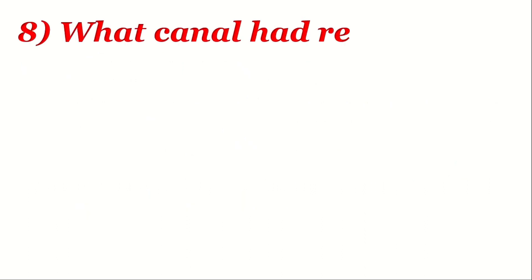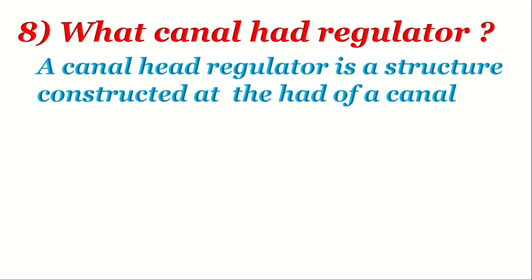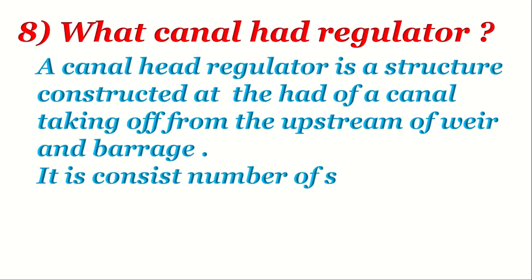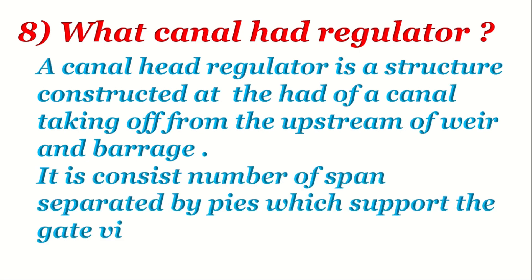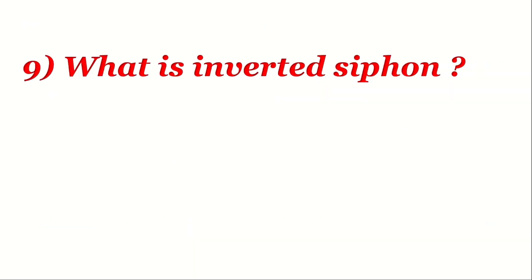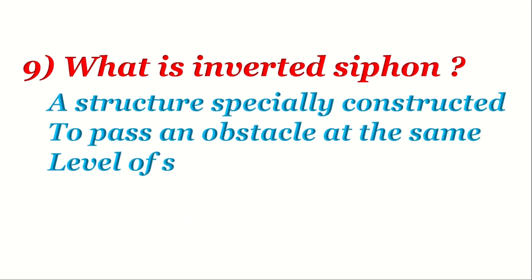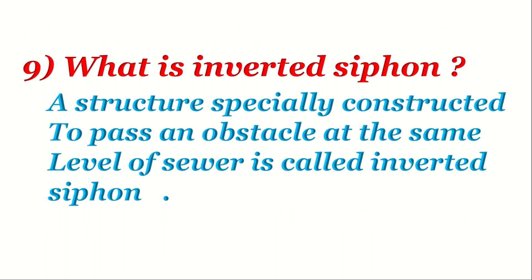Question 8: What is a canal head regulator? A canal head regulator is a structure constructed at the head of a canal taking off from the upstream of a weir and barrage. It consists of a number of spans separated by piers which support the gate boards for regulation of flow into the canal.